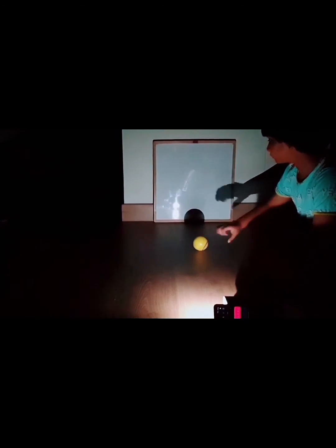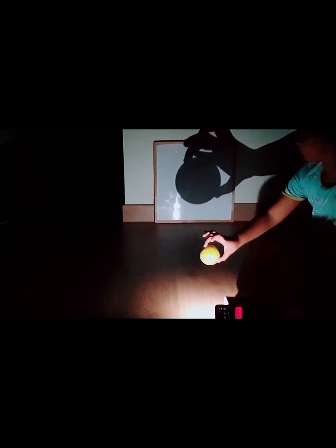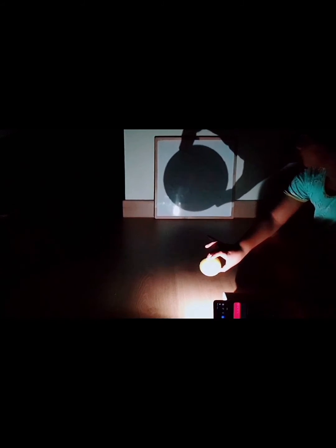So, we have seen that when an object is close to the light source, the shadow is large.